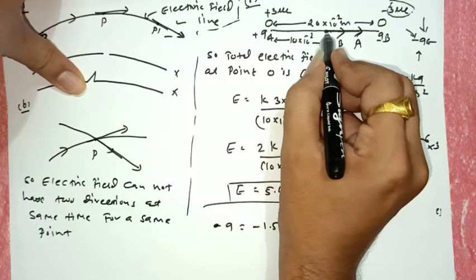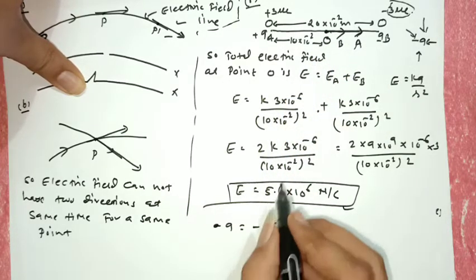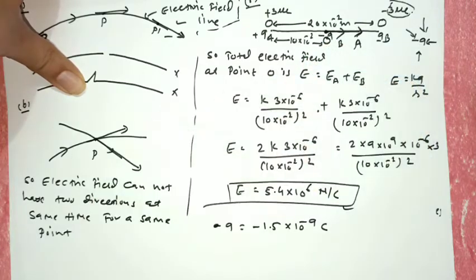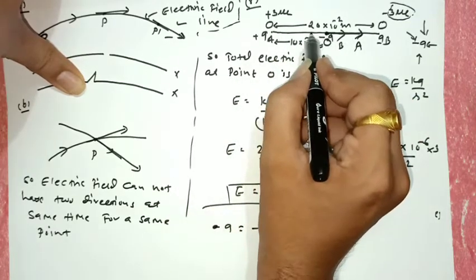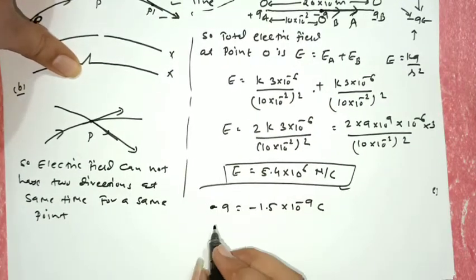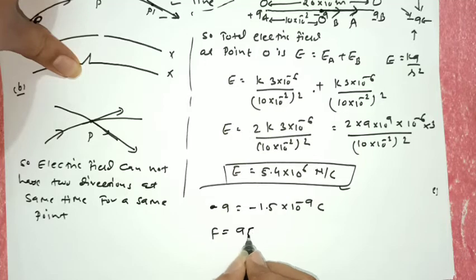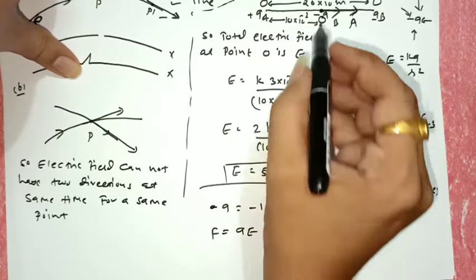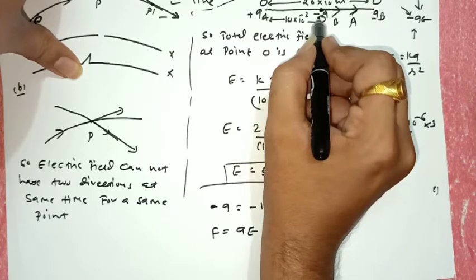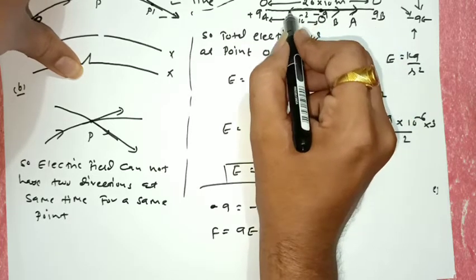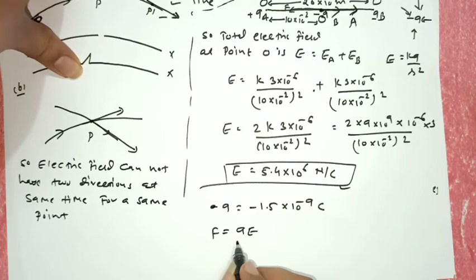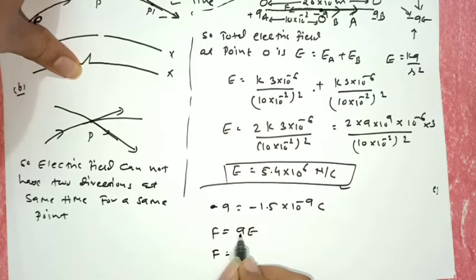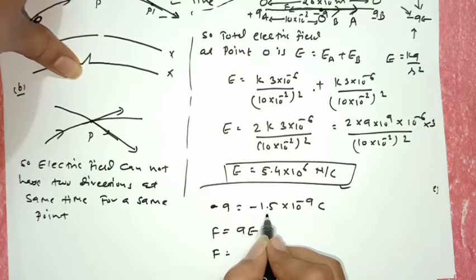At point O there is an electric field of magnitude 5.4 × 10⁶ N/C. A negative charge particle is placed in this electric field. From theory, when a charge particle is in an electric field, force F = QE. For a negative charge, the force acts opposite to the electric field direction.